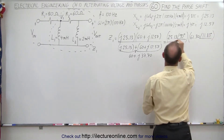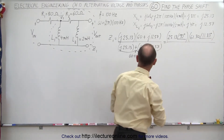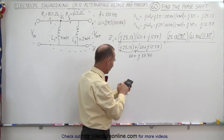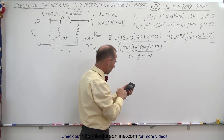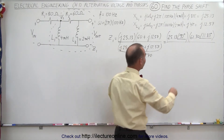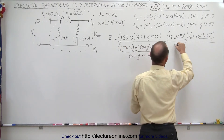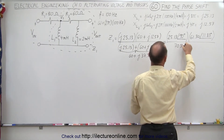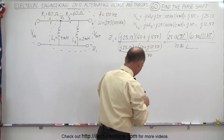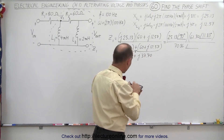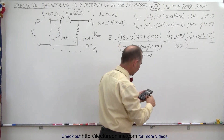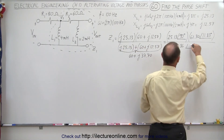And in the denominator, the magnitude of that would be the square root of 3600 plus 37.7 squared, which is 70.86, with an angle of the inverse tangent of 37.7 divided by 60, which is 32.14 degrees.